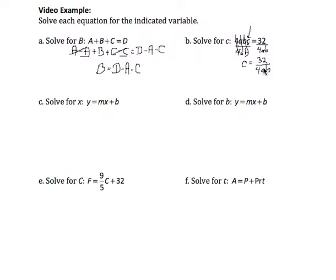Now I can reduce this. 32 over 4, 4 goes into itself one time. 4 goes into 32 eight times. So my final simplified result is C equals 8 divided by A times B.